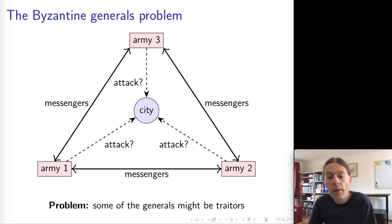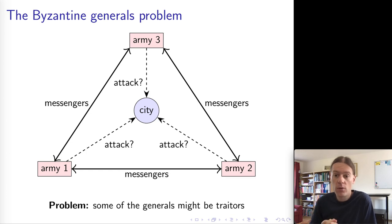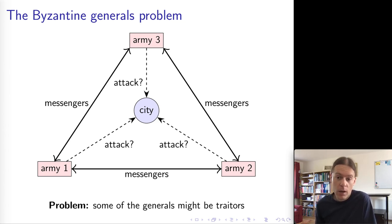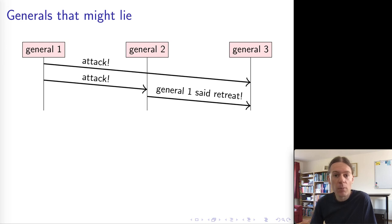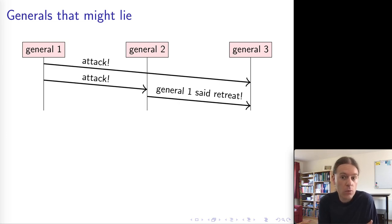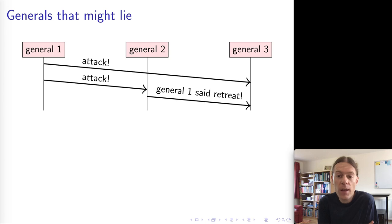The malicious generals might even work together, and nevertheless we want the honest generals to come to an agreement about the attack. So let me give an example of the problem that might arise. General one sends an attack message to generals two and three. General three receives that message as expected. General two receives the attack message and then sends a message to general three saying retreat.